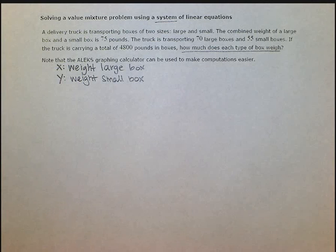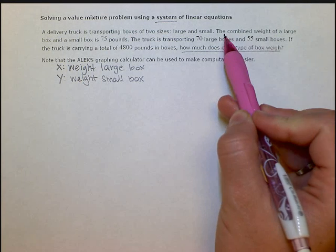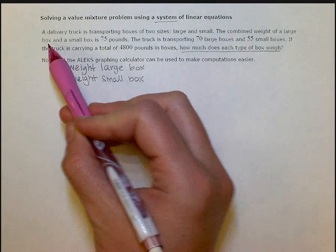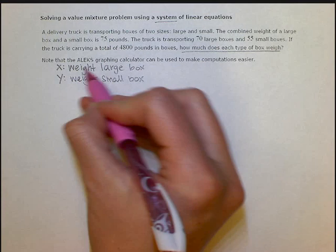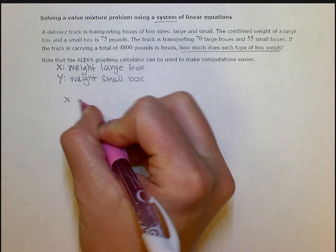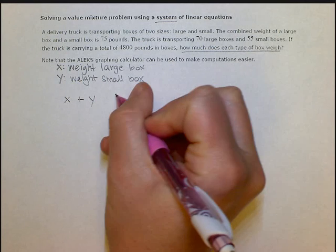Now that we know what our variables represent, we can look at the information given and write our equations. First, they tell us that the combined weight of a large box and a small box is 75 pounds. So the weight of a large box and the weight of a small box is 75 pounds.